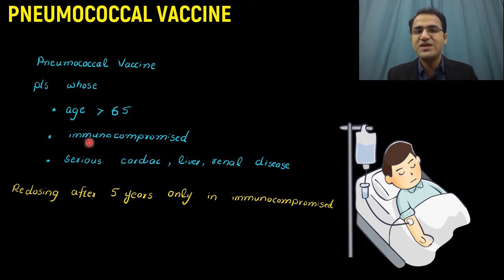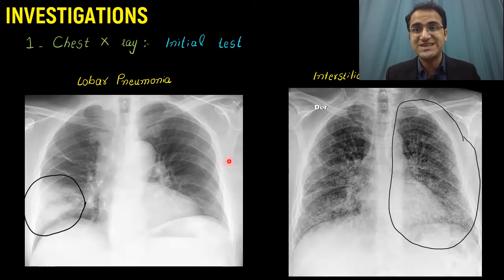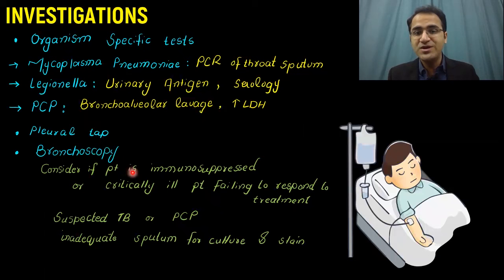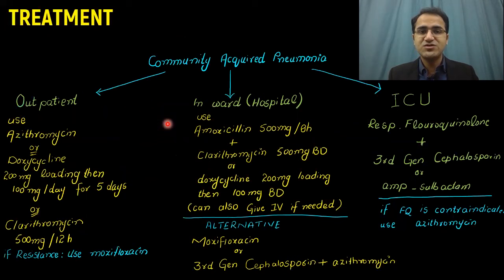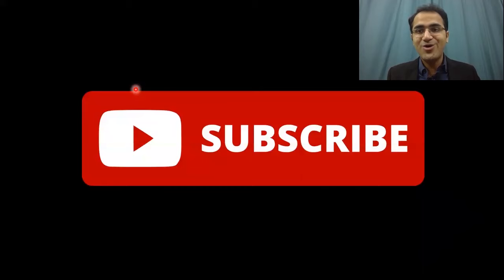In summary, we covered how to approach a patient presenting with fever and cough, distinguishing hospital exposure for CAP vs HAP, chest x-ray patterns, investigations including sputum culture and organism-specific tests, bronchoscopy only for severely ill patients, CURB-65 criteria for classification, treatment according to CURB-65 severity, steroid use only in severe community-acquired pneumonia, and pneumococcal vaccination indications.